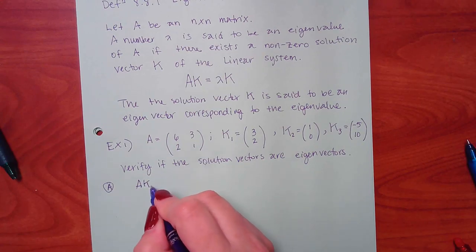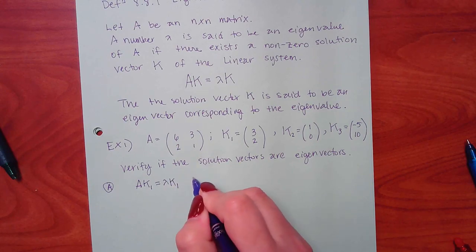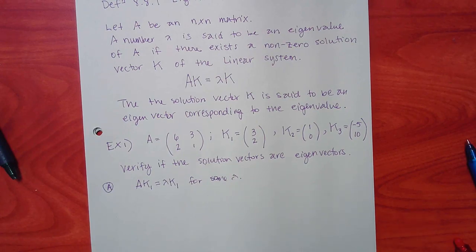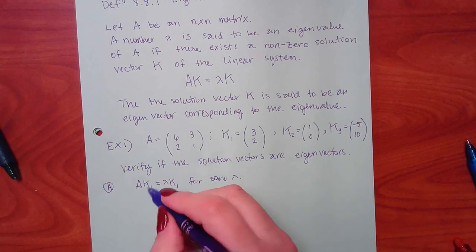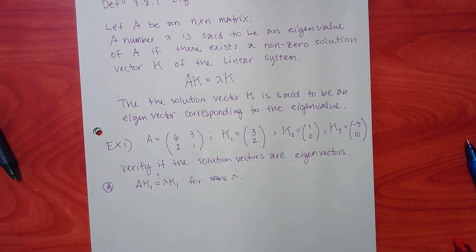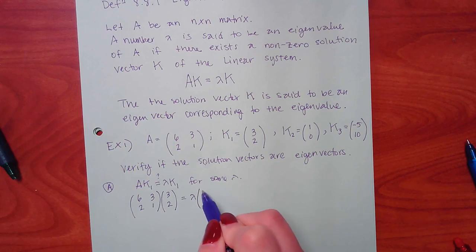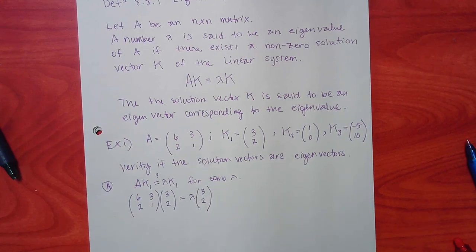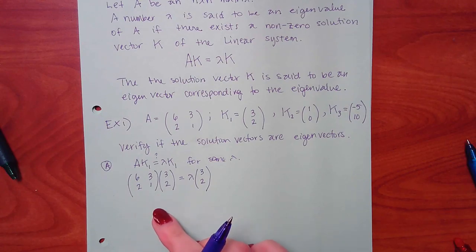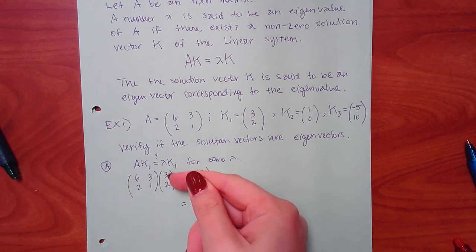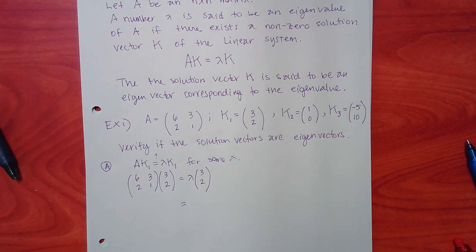They're not asking me to find that lambda from scratch, although you kind of do have to do it. I want to know if AK equals lambda K for some lambda — that's the question. Let's plug it in. Six, two, three, one is what A is, and three, two is K1. Lambda we don't know, so we're just going to keep it as lambda.